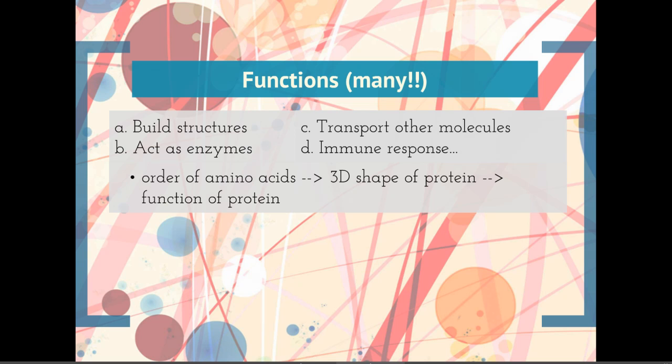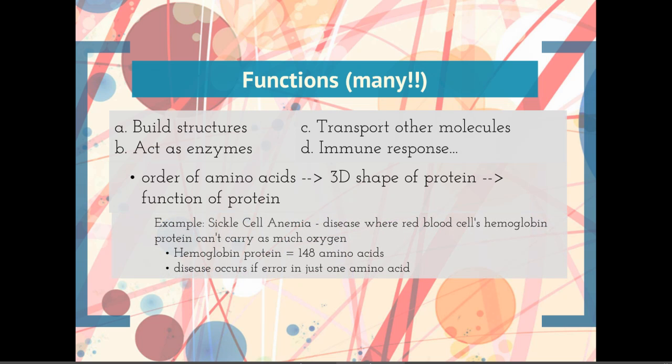The order of amino acids determine the shape, but the shape is different and now it will function to cut things apart, but not help put them together. So that's the idea with the order of amino acids. The order gives you different shapes, which leads to different functions. A good way to see an example of this is to see when it goes wrong and we lose a particular function.